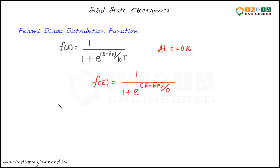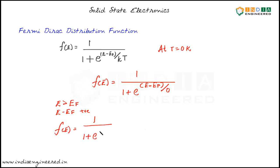Let's say we are looking for the probability at energy levels which are above the Fermi level — the probability of electrons at energy levels higher than Ef. If E is greater than Ef, then E minus Ef will be positive. Then f(E) can be written as 1 divided by 1 plus e to the power of plus infinity. Since e to the power of infinity is infinity, and 1 divided by infinity is 0, f(E) equals 0.